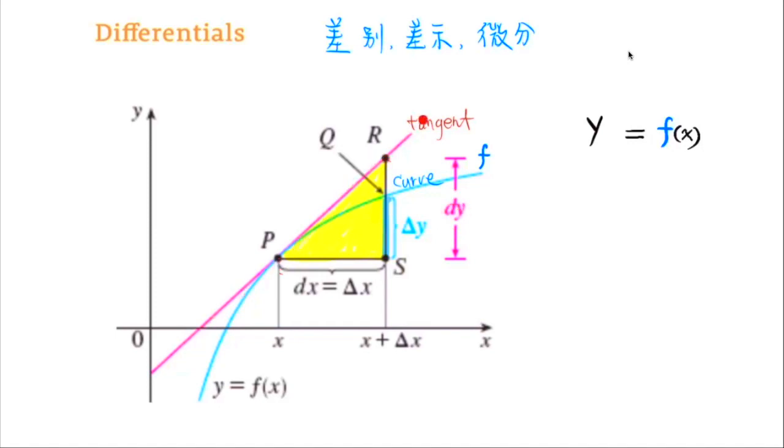The slope of this tangent line over here, if you look at this triangle here, it's going to be rise over run, which is going to be dy over dx. On the other hand, we also know that the derivative of this tangent at this point P is equal to the derivative of this function f evaluated at x, which is f prime of x. So the slope of the tangent is f prime of x, and it is also this rise over run, which is dy divided by dx. So these two quantities are equal to each other.